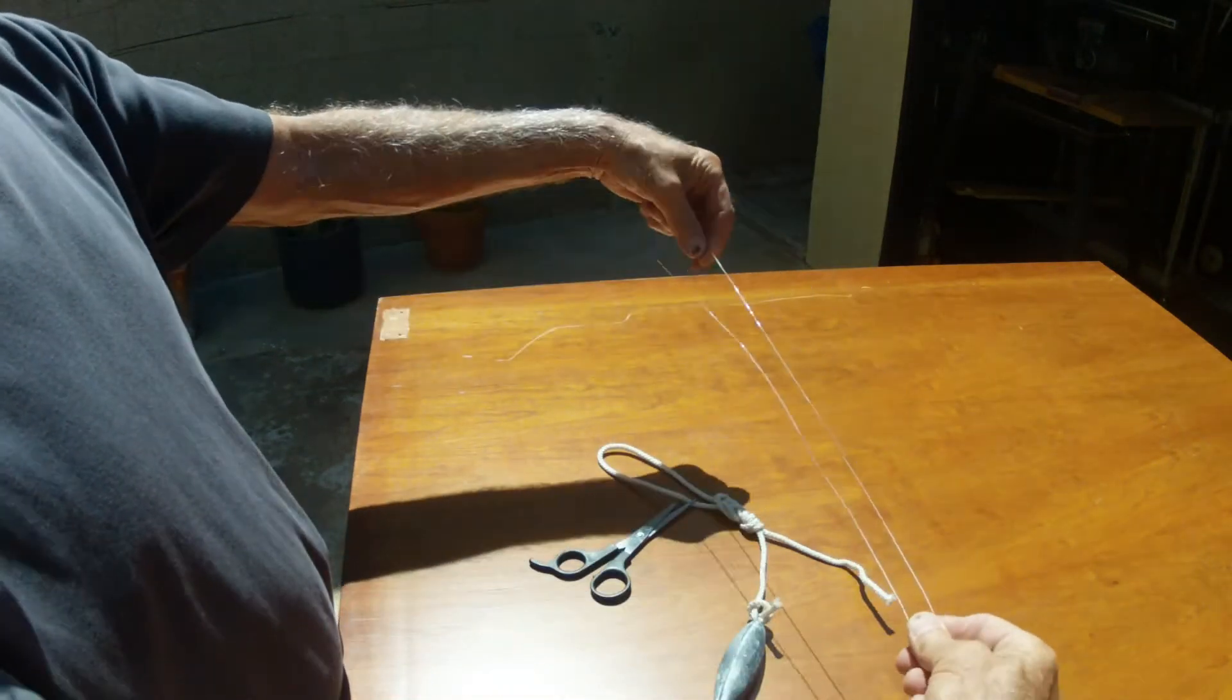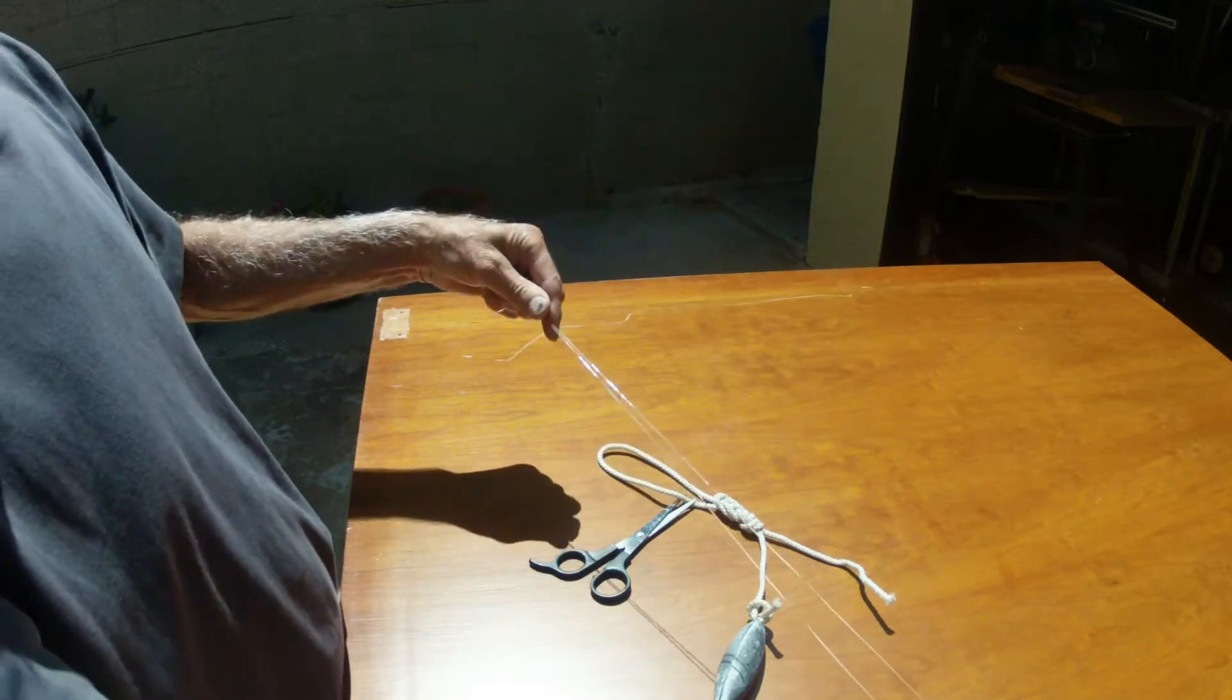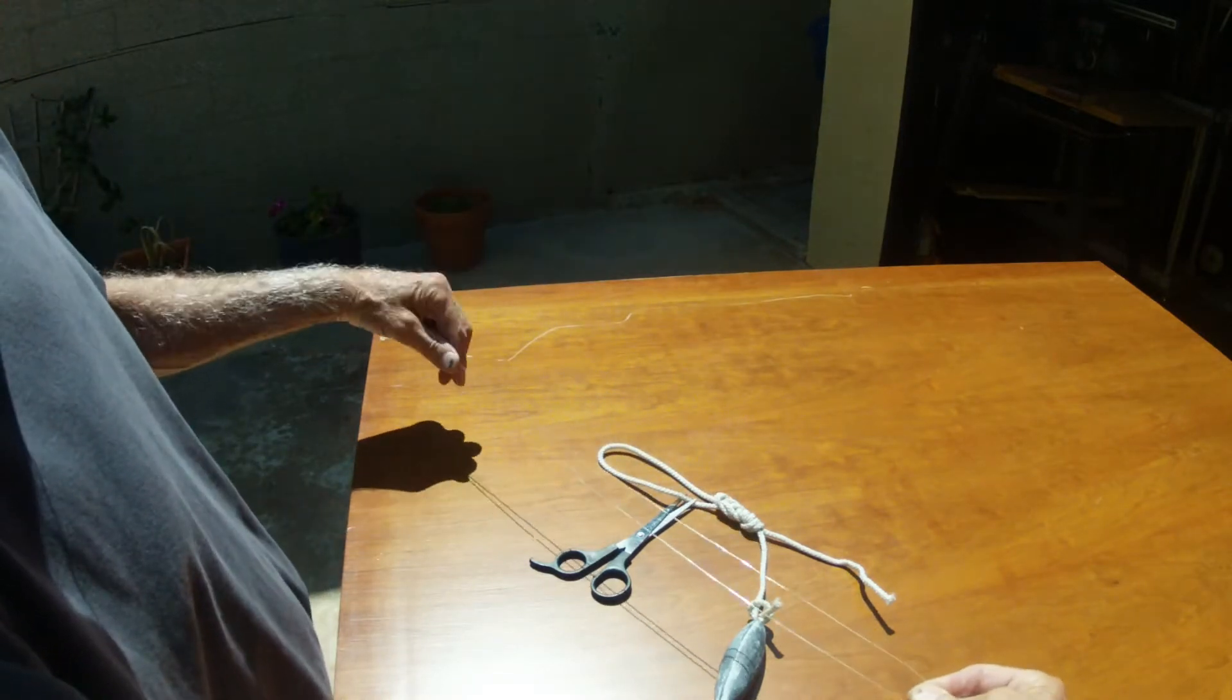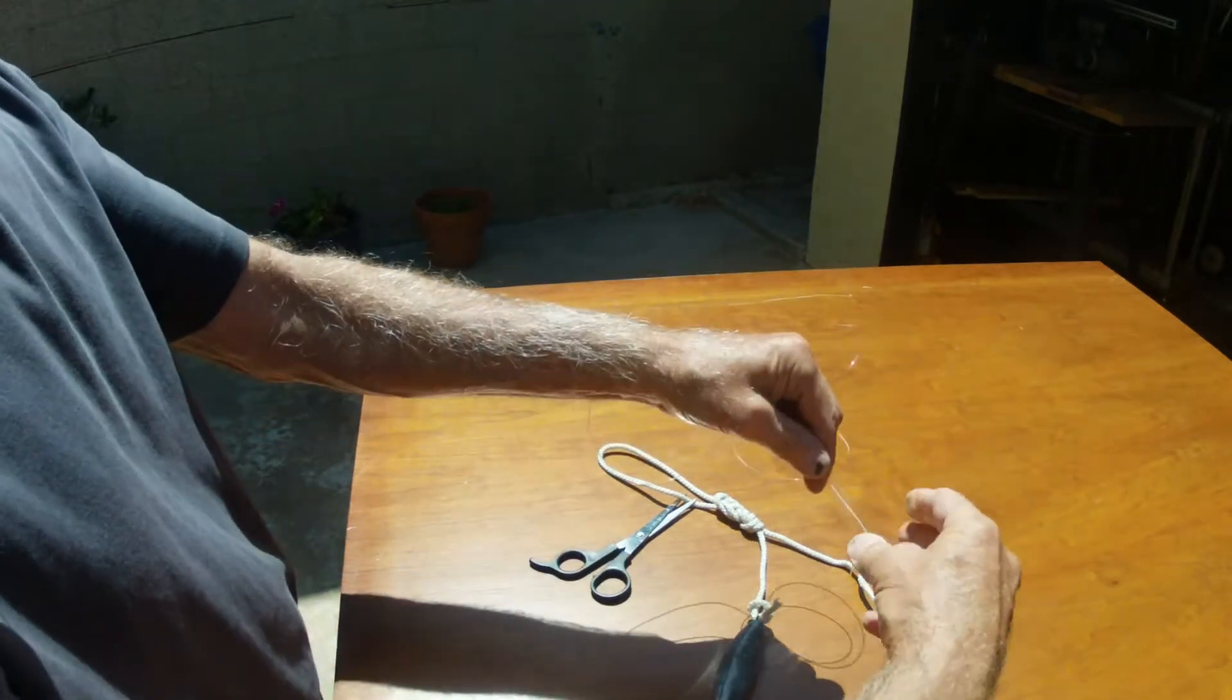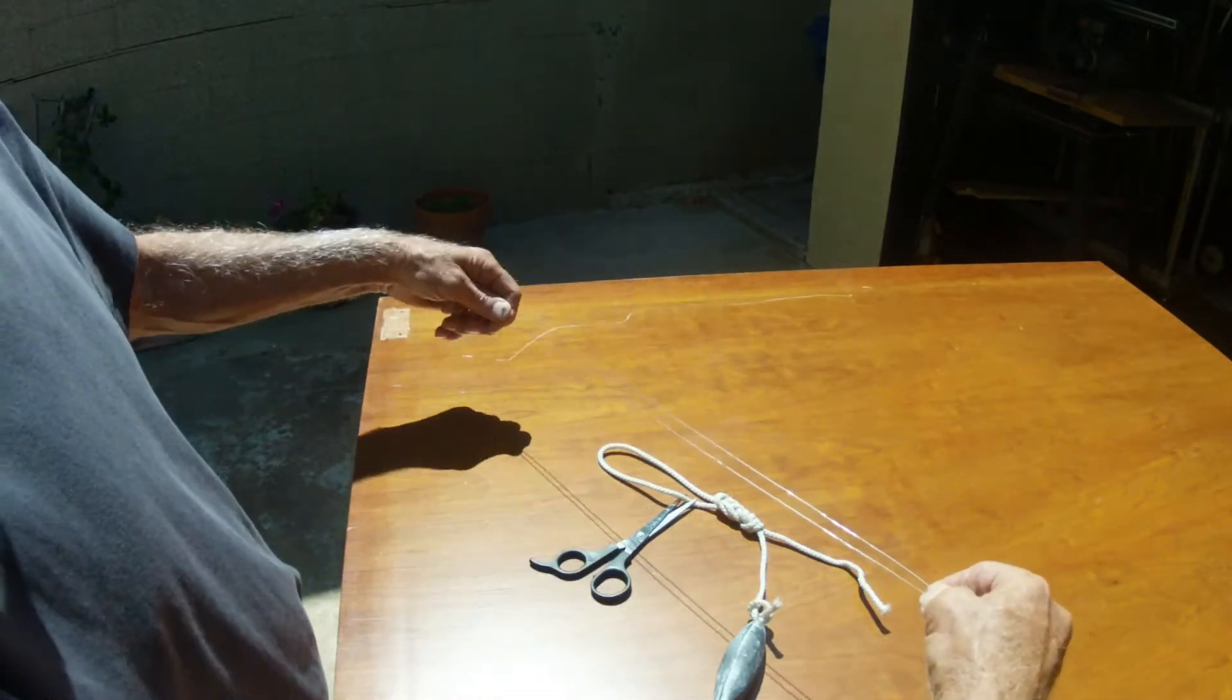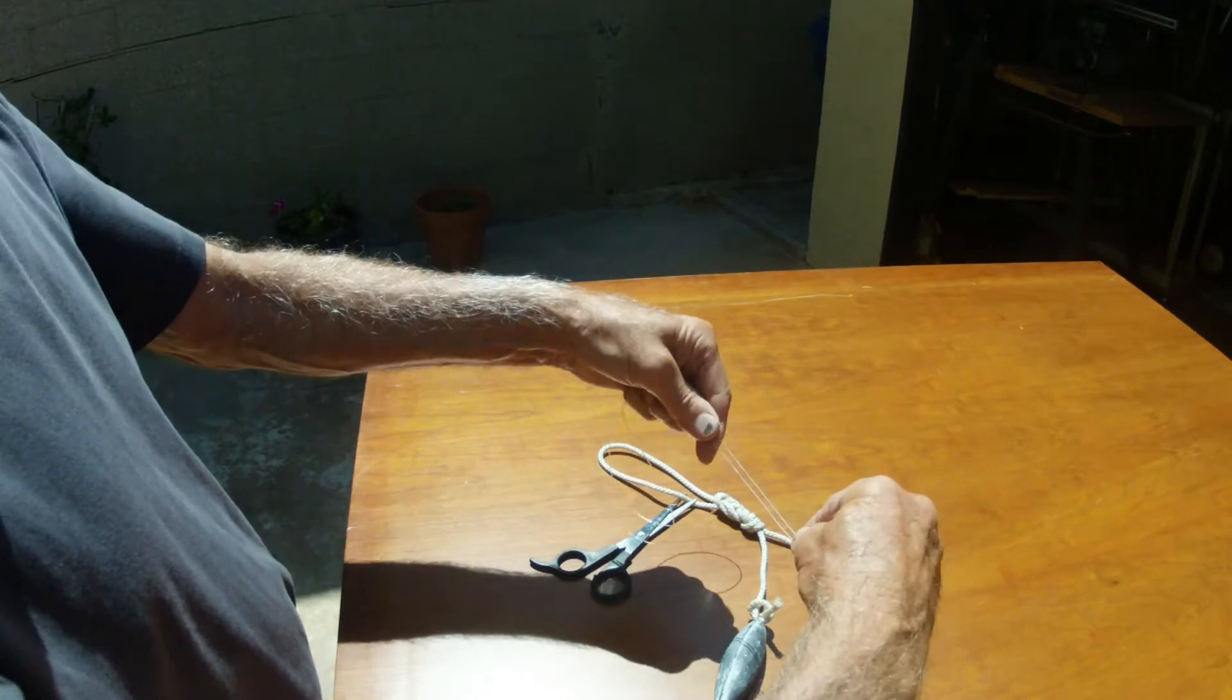This is going to be one of the strongest dropper loops that I have come across. To start with, you just make one large loop depending on how much extra line you need for the sinker and how big you want to make the loop.